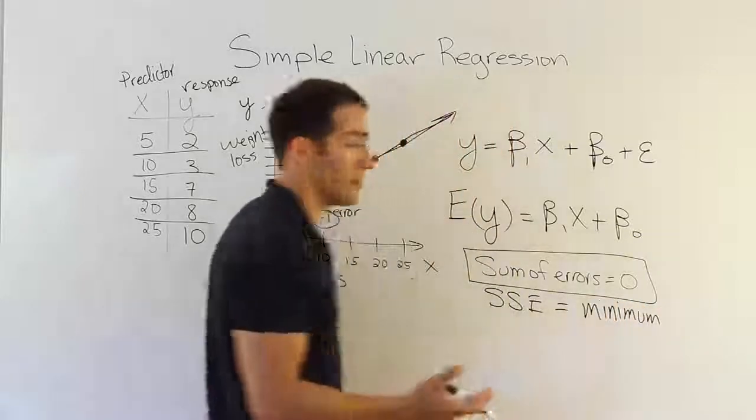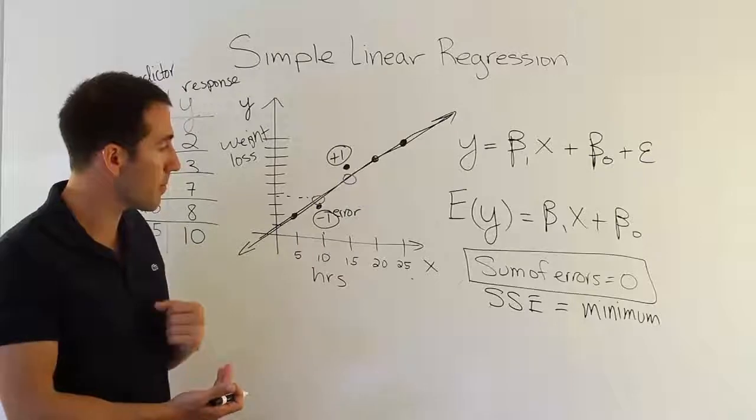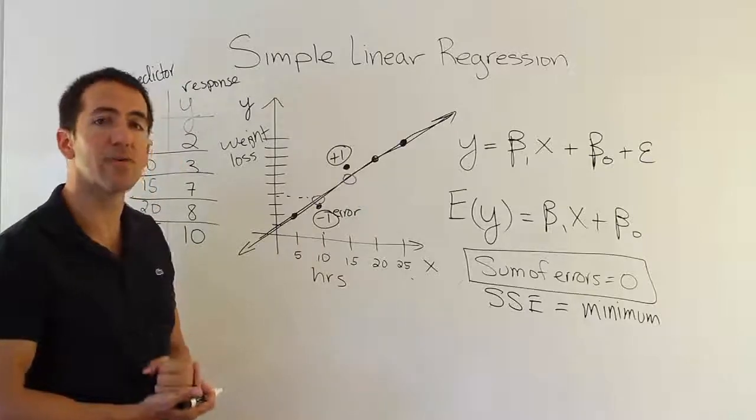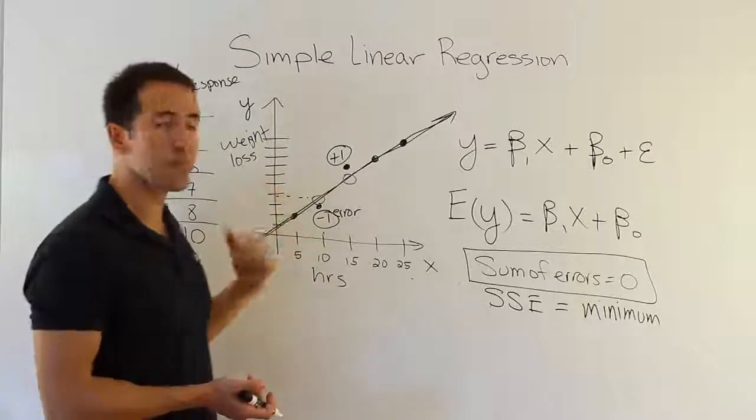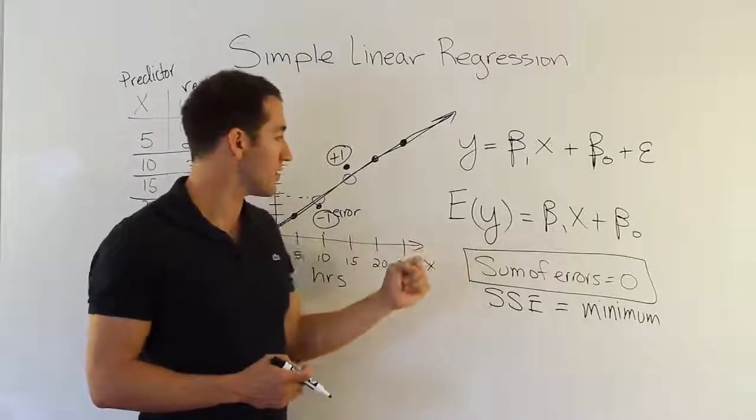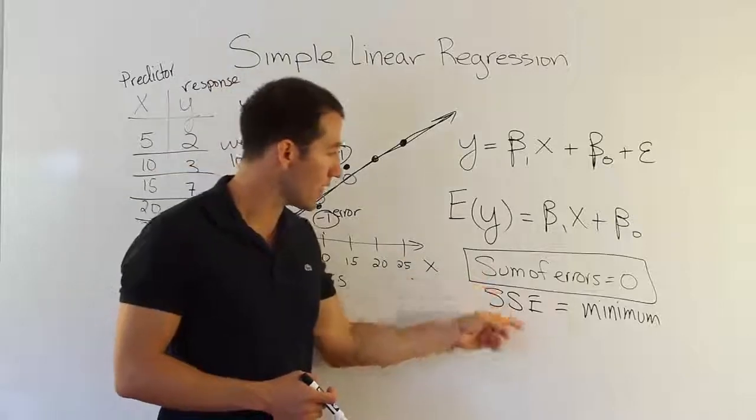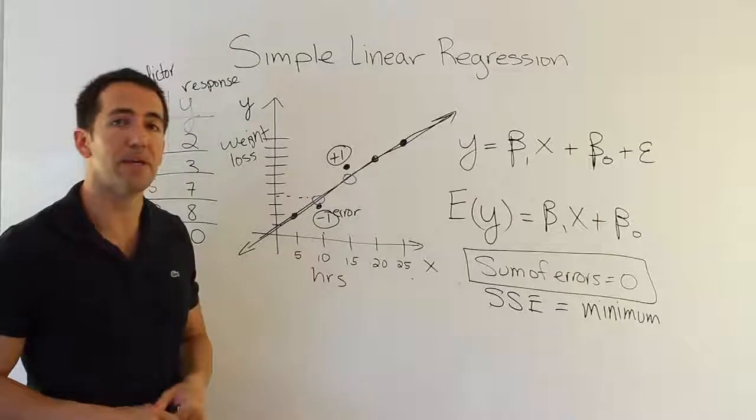We want that number to be an absolute minimum. Of course, the smallest number could be zero. That'd be great, but it's typically not zero. But we want it to be the smallest possible number of any line you can come up with. So, let's say there was an infinite set of lines that you could fit to these points. We want to find the line that had the sum of the errors to be zero, and then the sum of the squares of those errors to be the smallest possible value of all the other lines it's competing against.